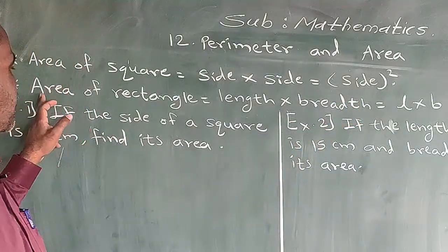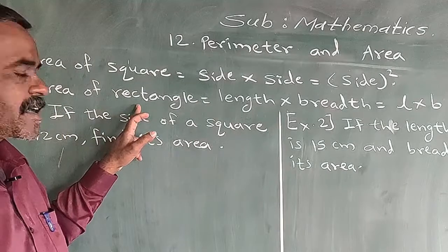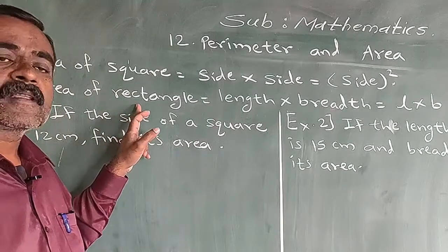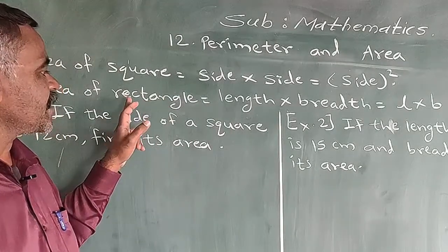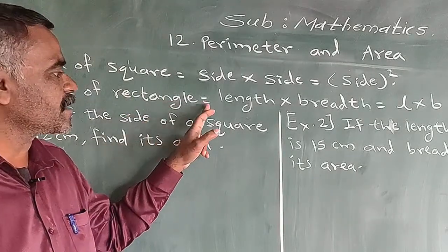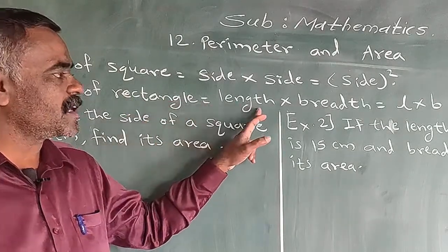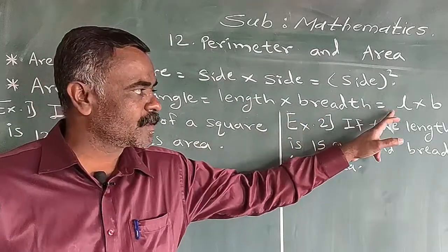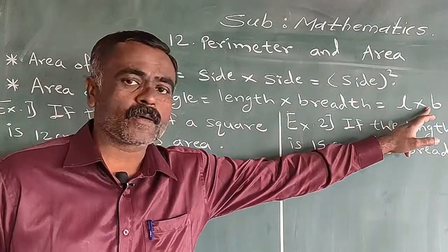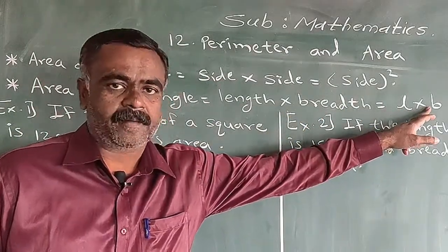Next is area of rectangle. The formula is: area of rectangle is equal to length into breadth, which is equal to L into B.